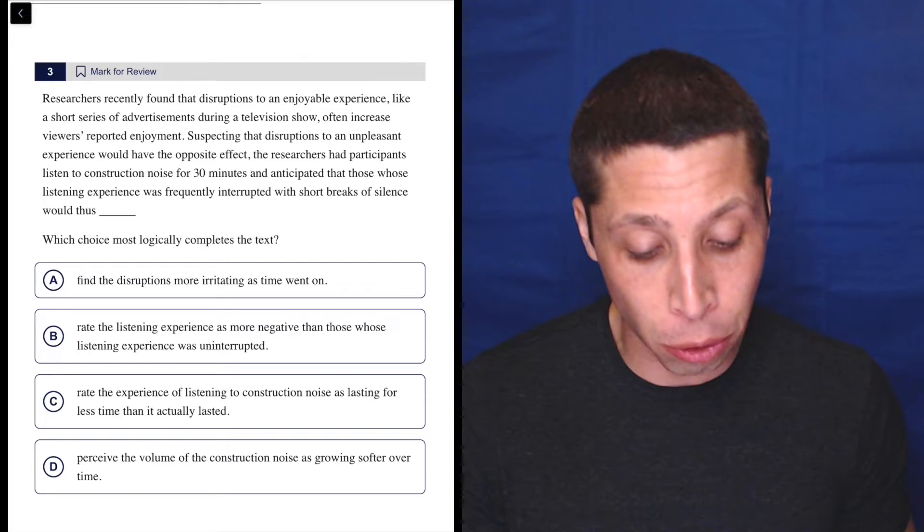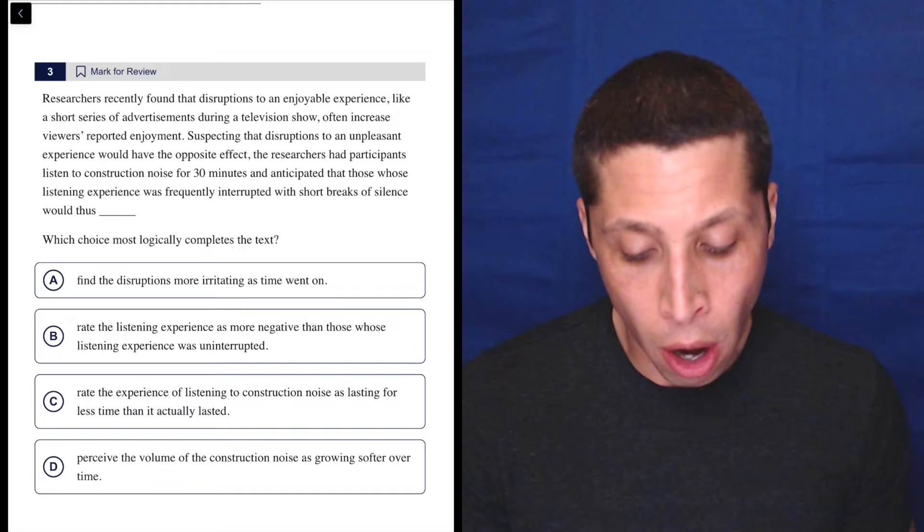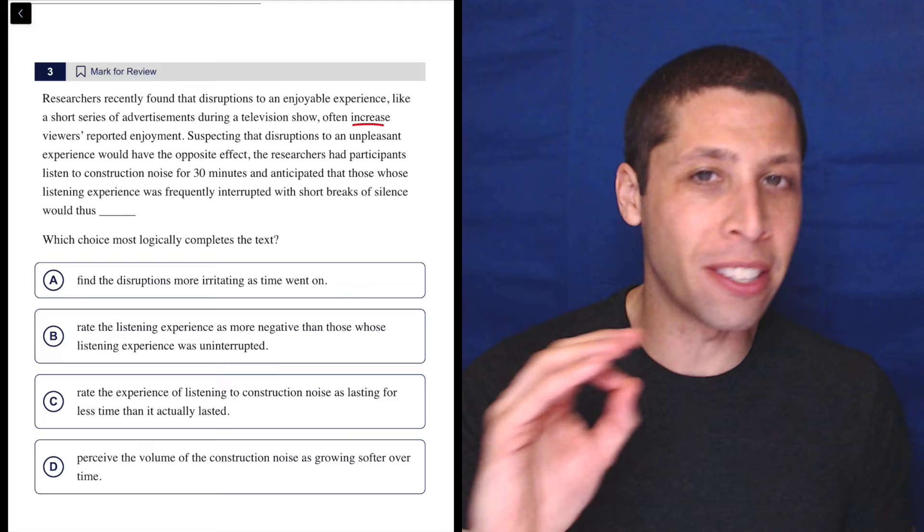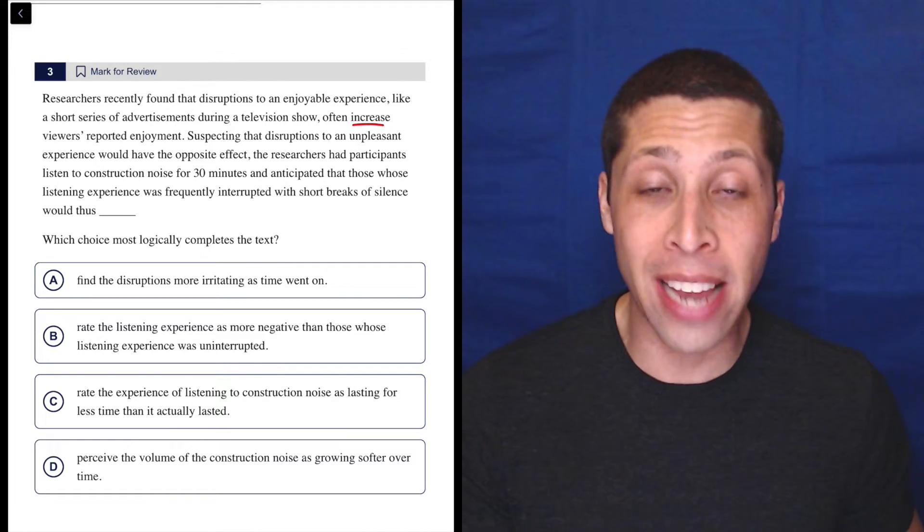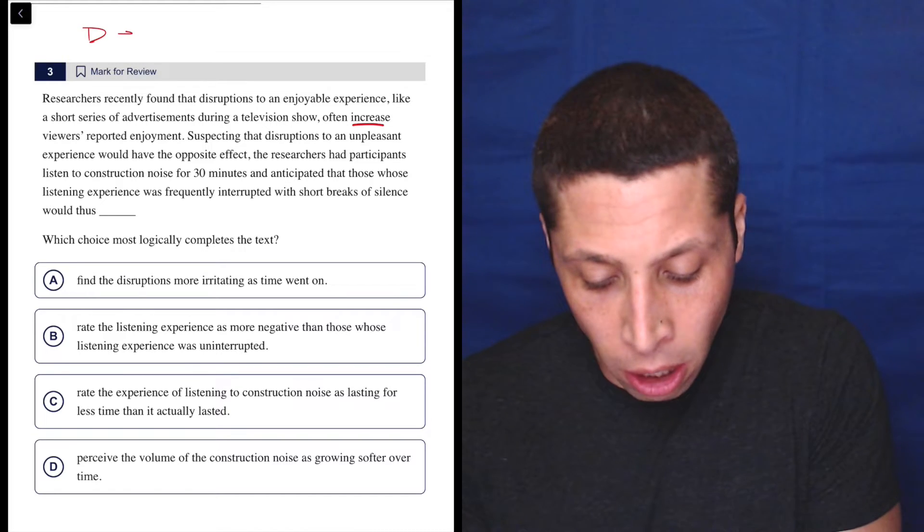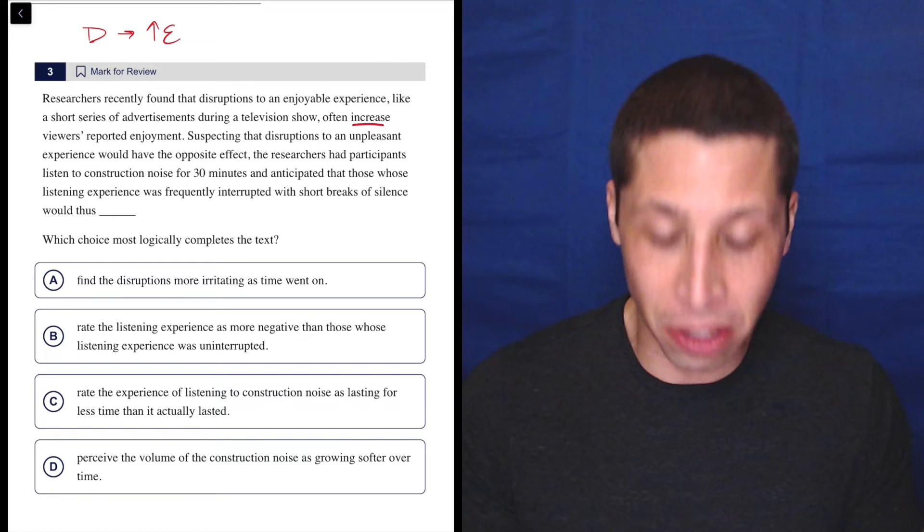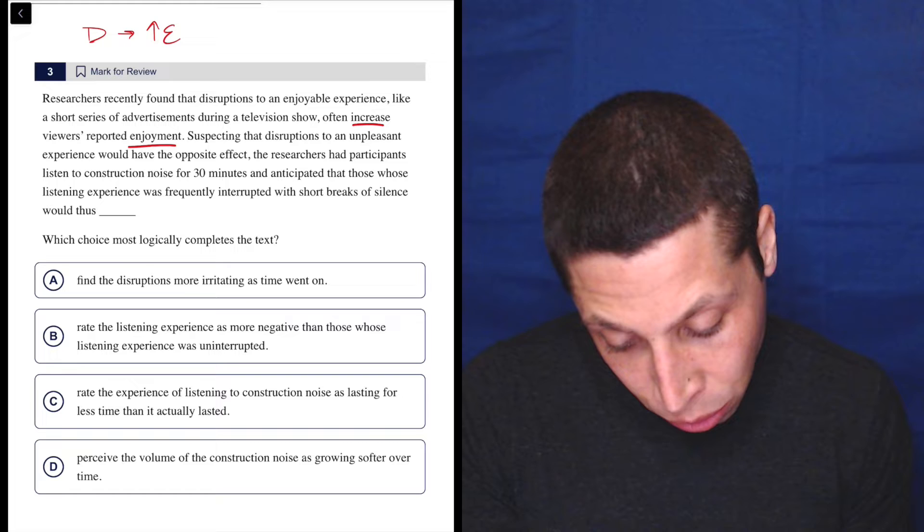Researchers recently found that disruptions to an enjoyable experience, like a short series of advertisements during a television show, often increase viewers' reported enjoyment. So words like increase and decrease, any sort of numerical word makes me want to draw some arrows, some ups and downs on my scratch paper. So what are they saying? They're saying disruptions cause an increase in enjoyment. I'm just using some letters here. Enjoyment and disruptions.